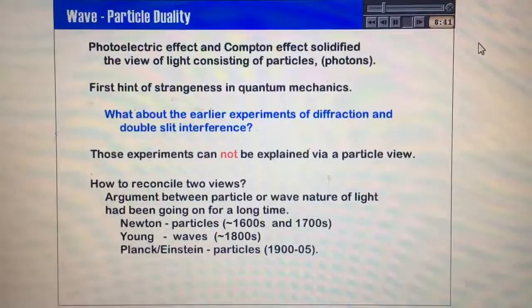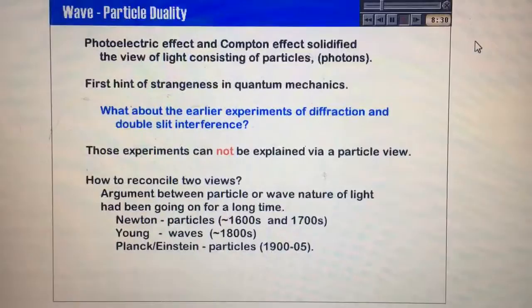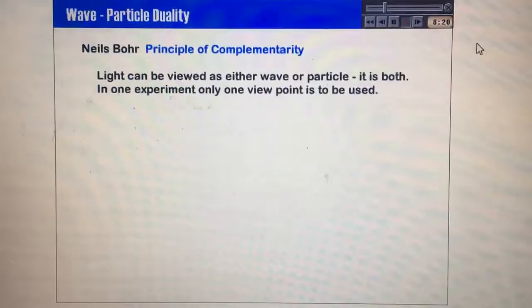And then comes along Planck and Einstein who come along and say, well, no, we must treat it as particles. So what is going on here? We seem to have two different ways of looking at light. Well, enter Niels Bohr, who did some work on early quantum mechanics. He came up with the principle of complementarity.